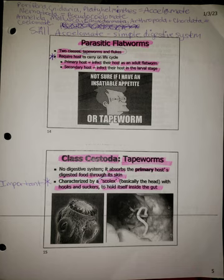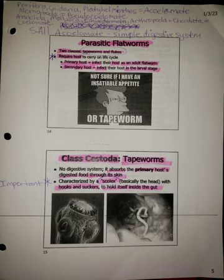Of the parasitic flatworms, there are two classes: tapeworms and flukes. They require a host to carry on their life cycle. The primary host is the one infected as an adult flatworm. The secondary host is infected in the larval stage. With class Cestoda — tapeworms — they have no digestive system.